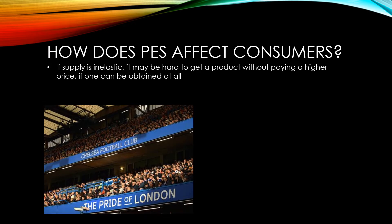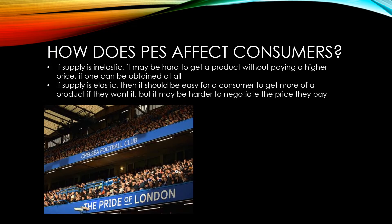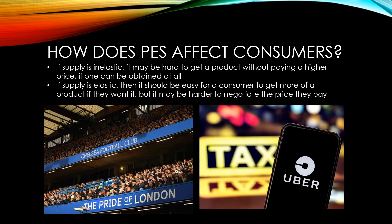If supply is elastic, it should be easier for a consumer to get more of a product if they want it, but it may be harder to negotiate the price they pay for it. Passenger firms such as Uber generally tend to have elastic supply, due to factors such as having low barriers to entry and flexible working hours.